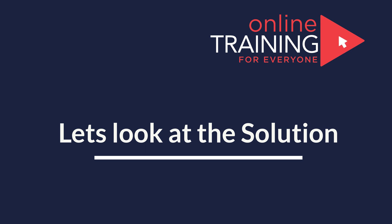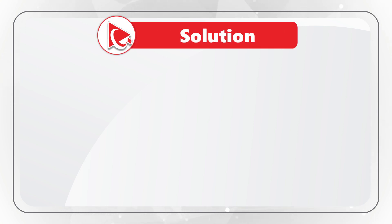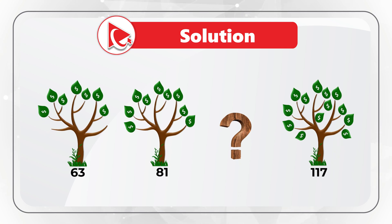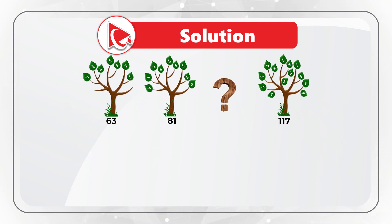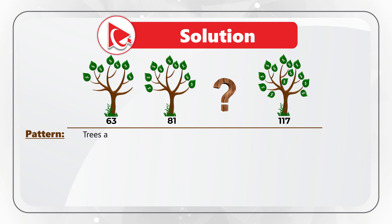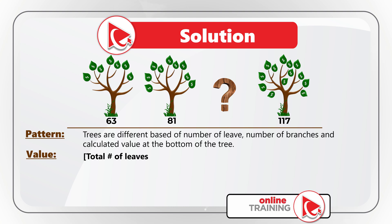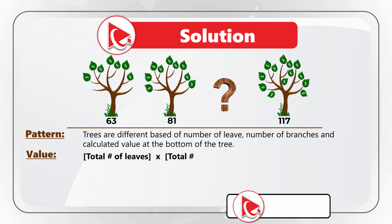I'm moving forward to share my version of the answer. To solve it, you need to take a close look at each tree. Each tree is different based on the number of leaves, number of branches, and calculated value at the bottom. To calculate that value, you need to multiply the total number of leaves by the total number of branches.